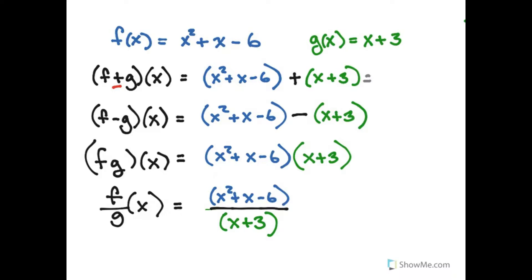I can simplify the result: x squared plus x minus 6 plus x plus 3 is going to be x squared plus 2x minus 3, but it just comes from adding the two expressions together. Similarly I can subtract: x squared plus x minus 6 minus x plus 3 is x squared minus 9.